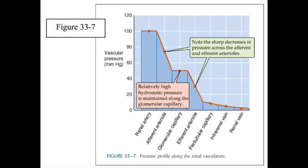Afferent and efferent arteriolar resistance control both glomerular plasma flow and the GFR, glomerular filtration rate.